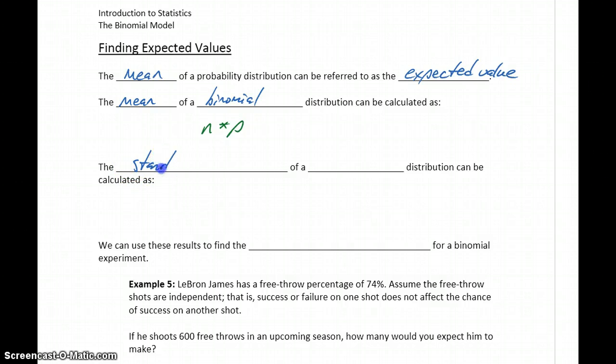We can also calculate the standard deviation of a binomial distribution. We calculate that as the square root of n times p times 1 minus p. That's our number of trials times the probability of success times the probability of failure. We take the square root of that entire statement.